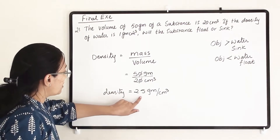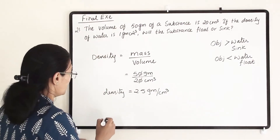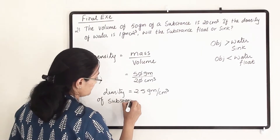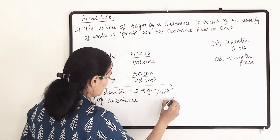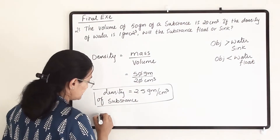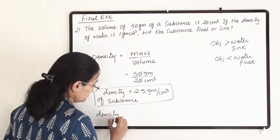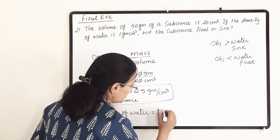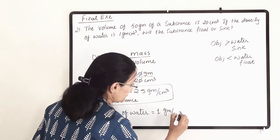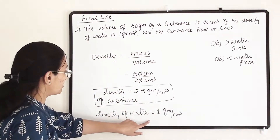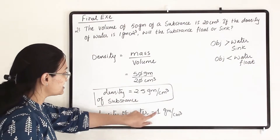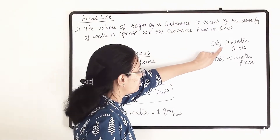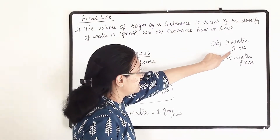Now we need to compare this with water. The density of the substance is 2.5 grams per centimeter cube, and the density of water equals 1 gram per centimeter cube. Clearly, the water's density is lesser than the density of the substance. So when the object's density is more compared to water, it will sink.